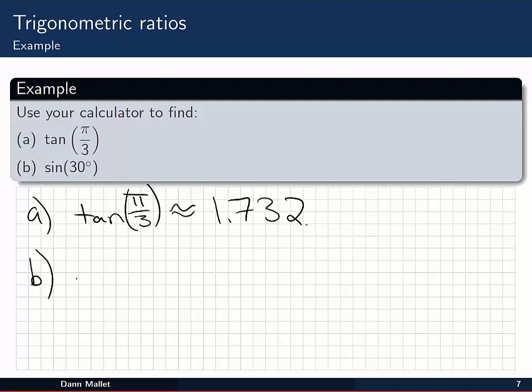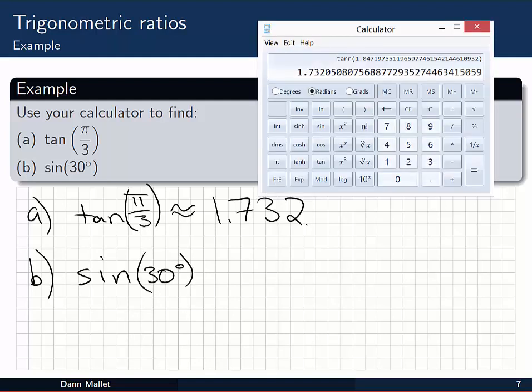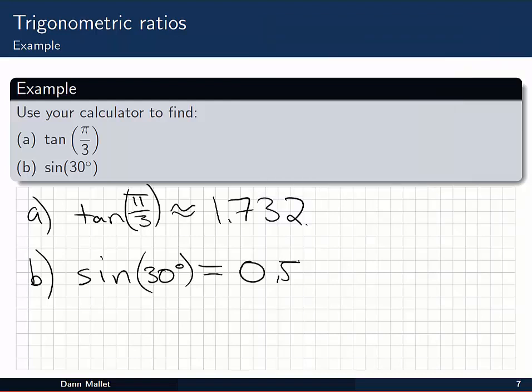In part B, I've got to find the sine of 30 degrees. Straight away it tells me I'm looking at degrees. So I go back to my calculator, change it back to degrees, clear everything off. And I want 30 degrees, and I want the sine of that. So look for the sine button. There we go. And sin of 30 degrees is exactly 0.5.